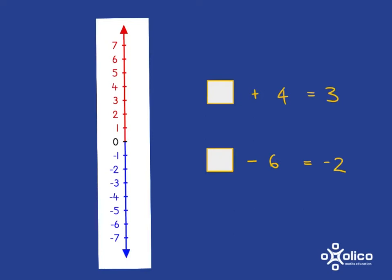Let's look at some slightly more difficult ones where we're not even given the starting point — but we can figure it out. We've started somewhere, added 4, and ended up at 3. So let's mark on where we've ended up: at 3. We were going up from somewhere, 4 steps, and ended at 3. To find where we started, we go back down 4 steps from 3 — that's 3 steps, and 1 more step — so I must have started at negative 1.